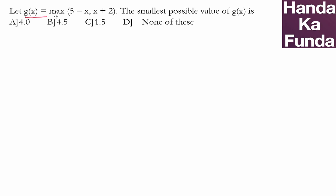In this question we are given a function g(x) which is actually the max of 5 minus x and x plus 2. So first of all what does this even mean?